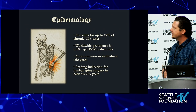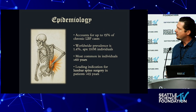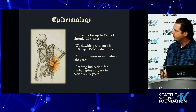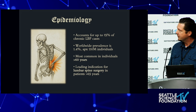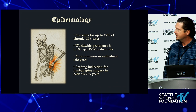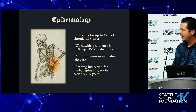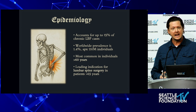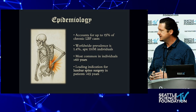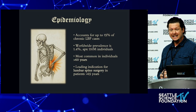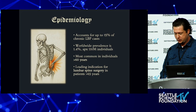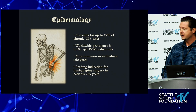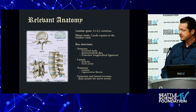Epidemiologically, it's a very common condition — conservatively 1.4% prevalence, over 110 million individuals worldwide. It's definitely more common as we age, over the age of 60. It's the leading indication of lumbar spine surgery over the age of 65.